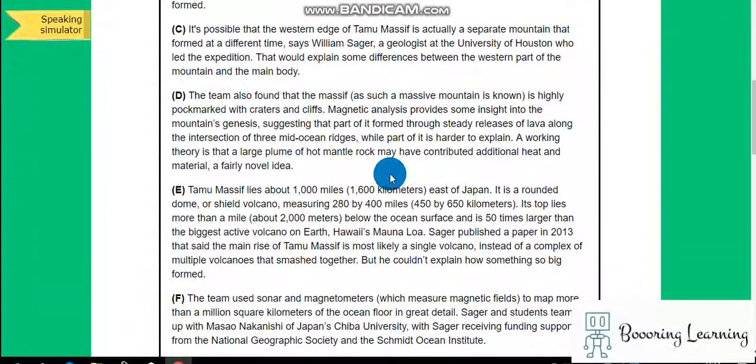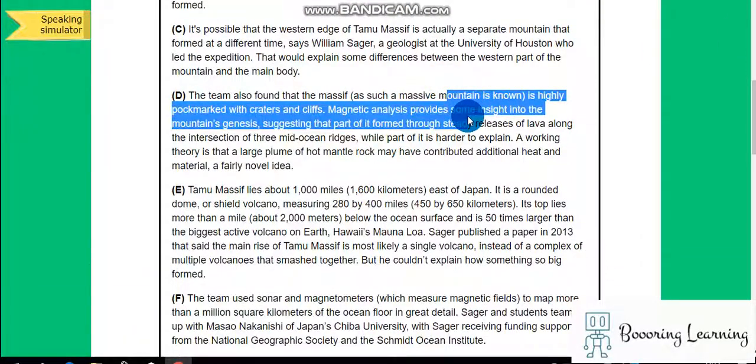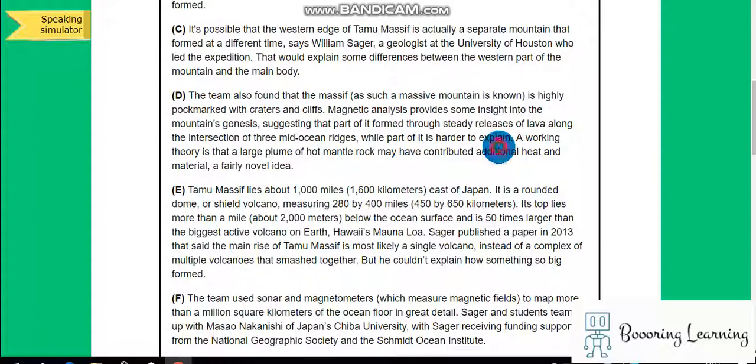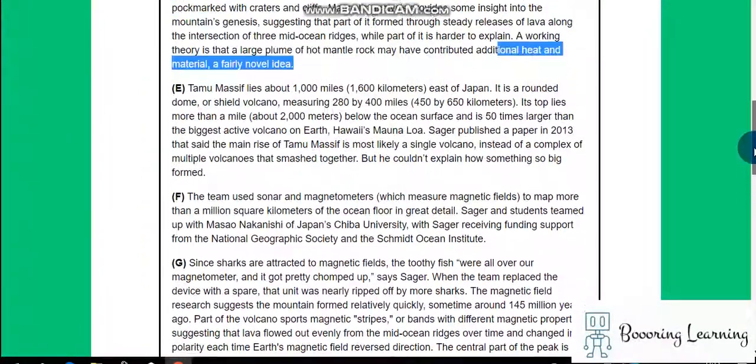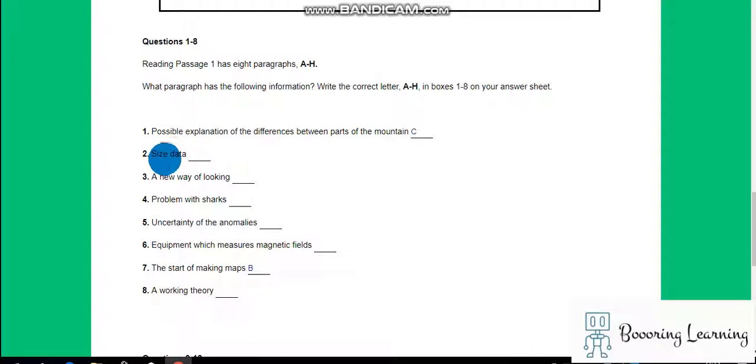The team also found that the massif is highly pockmarked with craters and cliffs. Magnetic analysis provided some insights into the mountain's genesis suggesting that part of it formed. A working theory is that a large plume of hot mantle rock may have contributed additional heat and material, a fairly novel idea. So it must be size data, not a new way of looking, not problem with sharks, a working theory. So it is D.